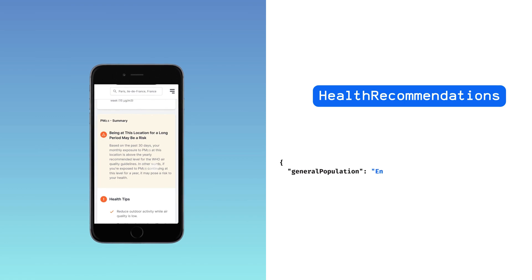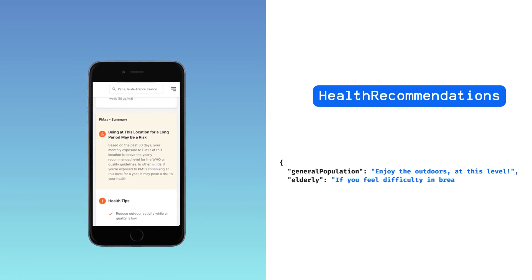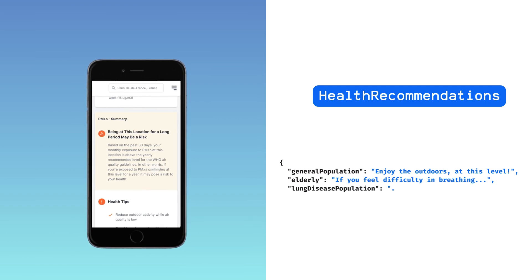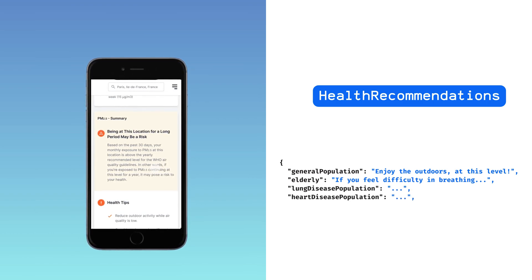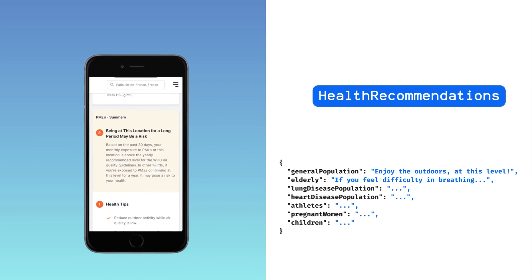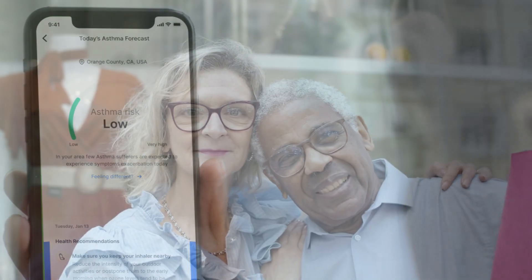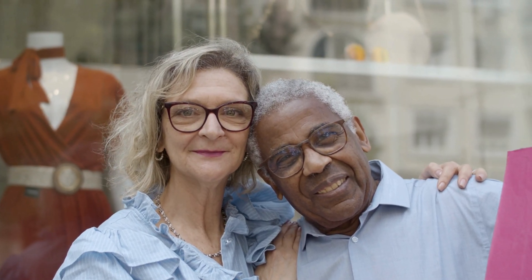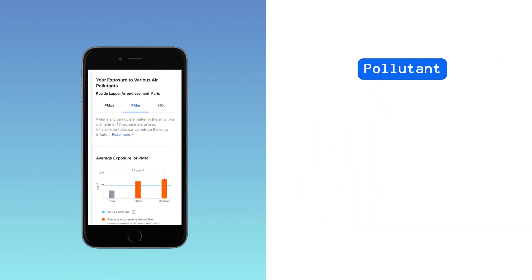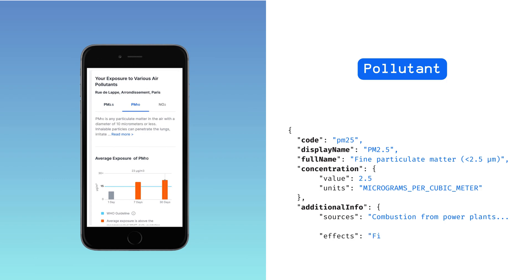And that's not all. You can provide users with actionable health-related recommendations for avoiding exposure for the general public and sensitivity groups including children, elderly, pregnant women, athletes and those with asthma or heart conditions. And among the pollutant details, you can show more in-depth information of the different pollutants, highlighting the dominant pollutants, concentrations, sources and effects.